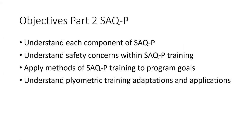We'll go through each of this — SAQP: speed, agility, quickness, plyometrics — what are the differences, what are the safety concerns, technical concerns, and then we're going to get into some methods of how to program and how to include these types of training within our program design, because they are very specific to most field and court sports, requiring a lot of these different techniques and patterns. We'll get into how to implement them and some more technical stuff.